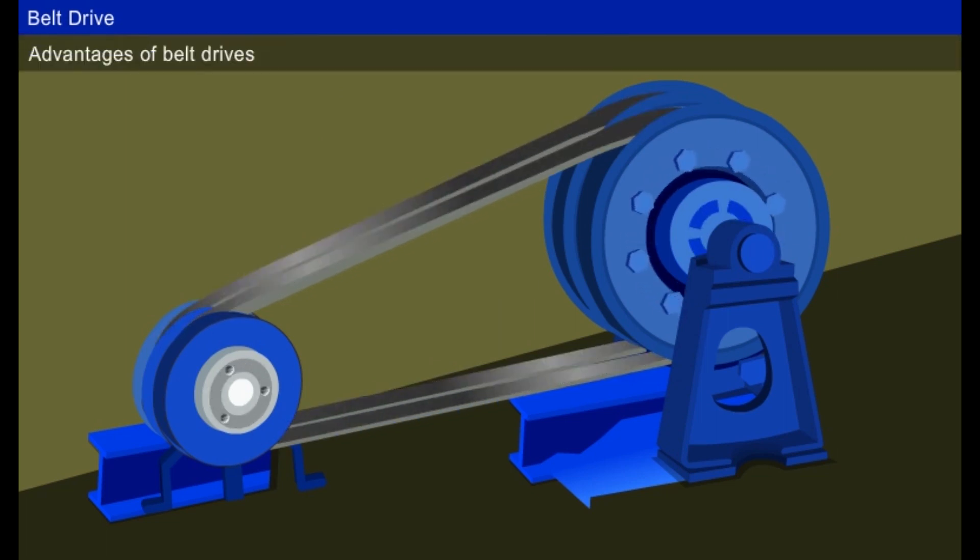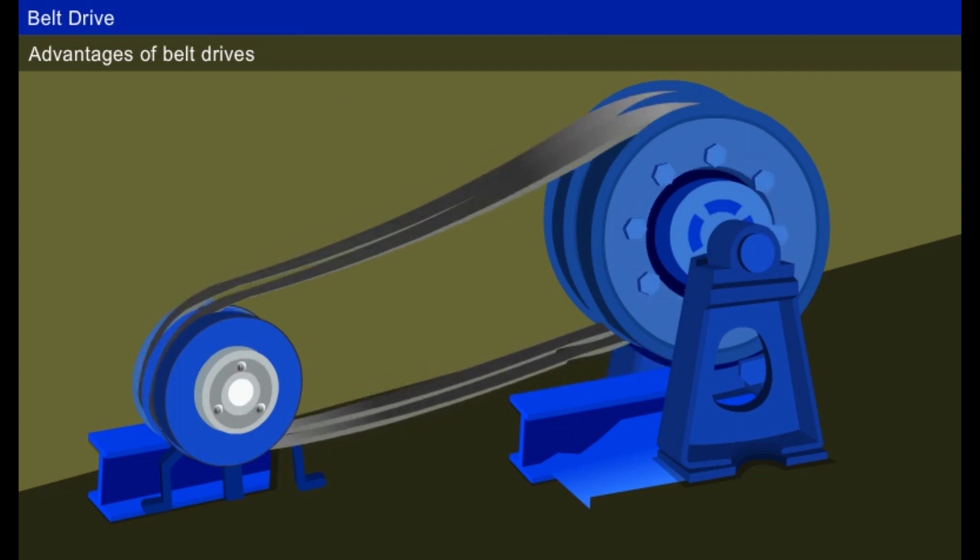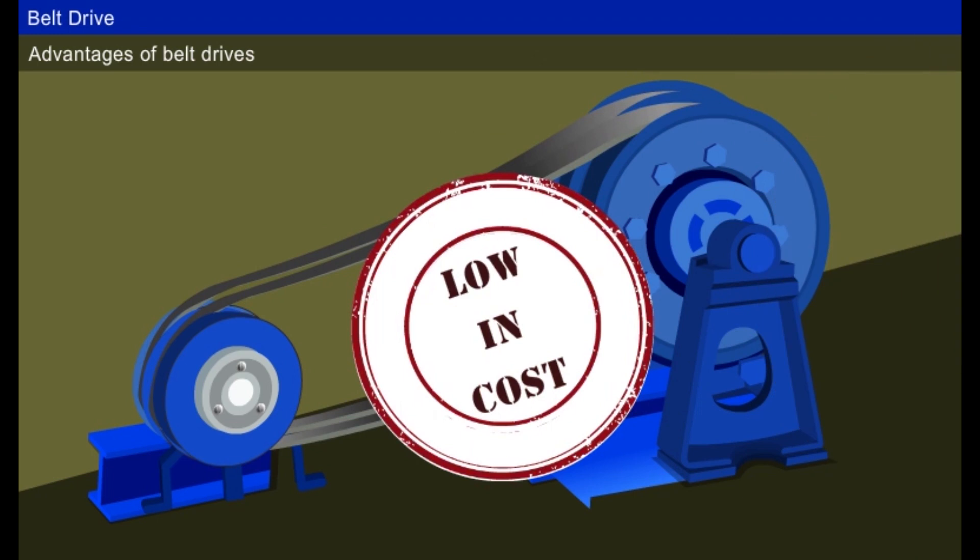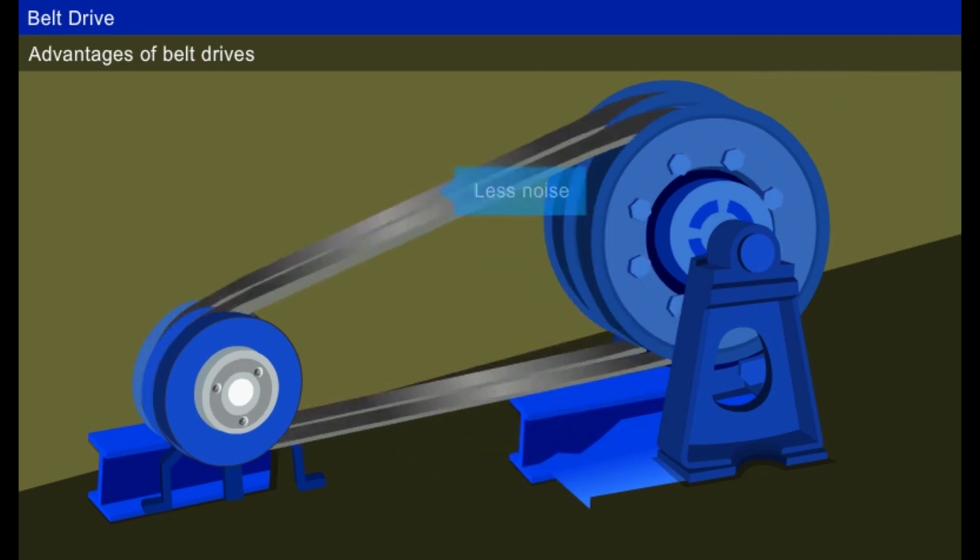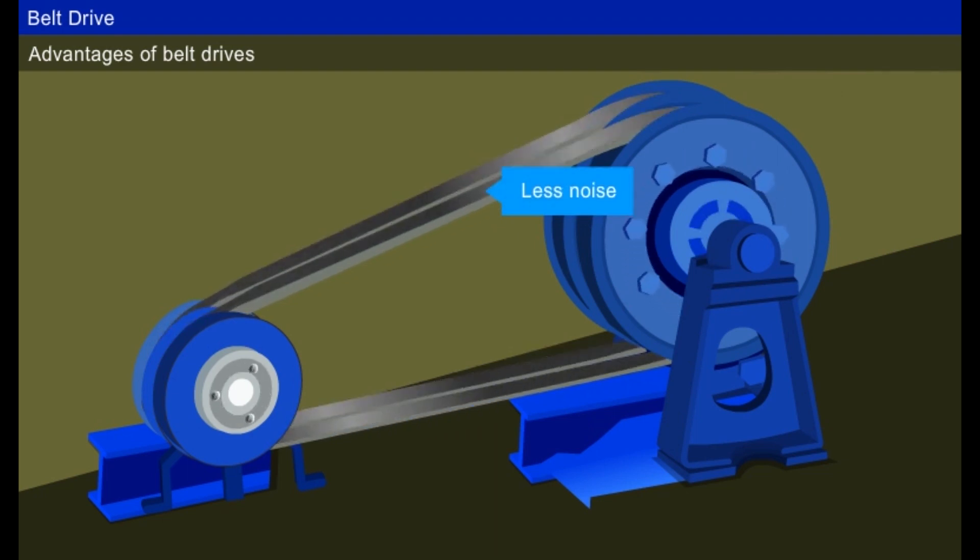Some of the advantages of belt drives are: Belt is made up of flexible material. Initial cost is low. No need of lubrication. Noise and vibrations are less in belt drives.